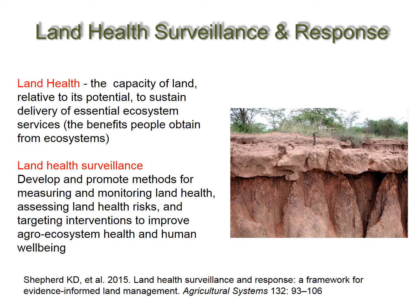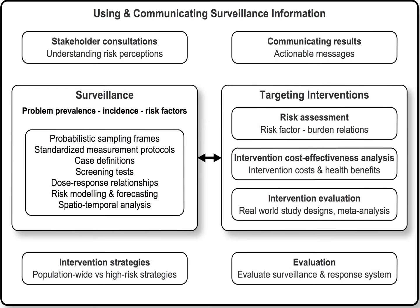We have published this framework, which provides a review of surveillance science in agricultural systems. If we look at a surveillance framework used in public health, we are very far from achieving the kind of scientific rigour achieved in public health when it comes to land health and degradation. We are not using probabilistic sampling frames, we don't have clear case definitions on what's degraded, rapid screening tests, and we really don't know the dose-response relationships between risk factors and degradation. Risk modelling and forecasting is even unheard of and we see very little intervention cost-effectiveness analysis, so we have a long way to go.